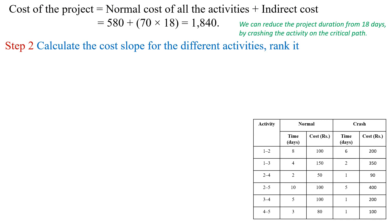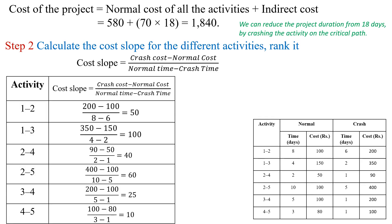The cost slope is calculated as crash cost minus normal cost divided by normal time minus crash time. For activity 1-2: cost slope is 200 minus 100 divided by 8 minus 6, which is 50. Similarly, for activity 1-3 the cost slope is 30, activity 2-4 is 40, activity 2-5 is 60, and activity 3-4 is 25.